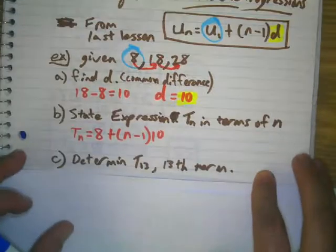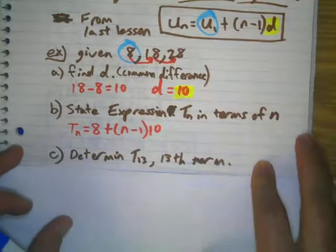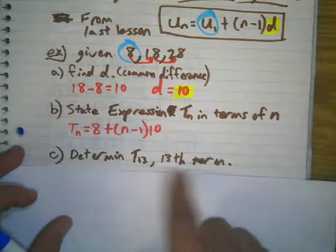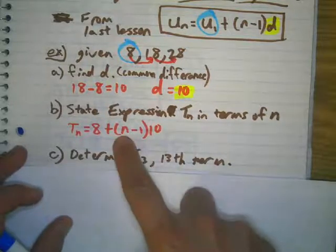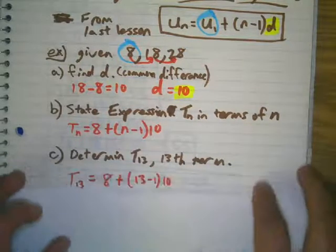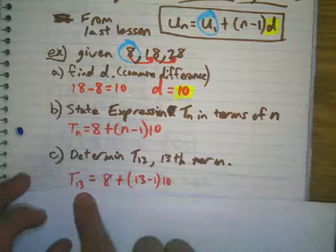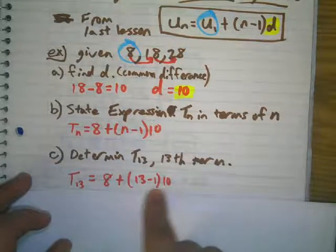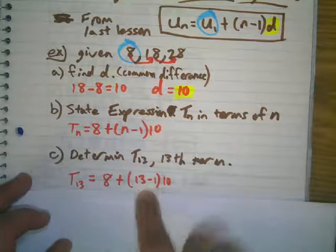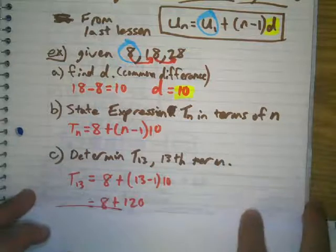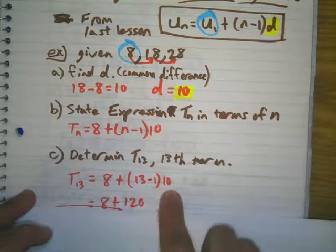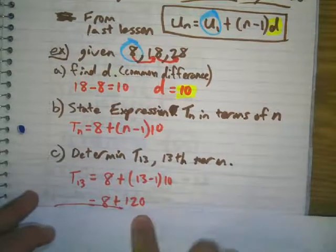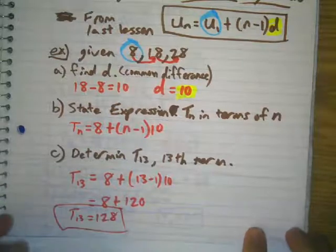Now if they say determine the 13th term, I'm just going to plug in 13 for n. So the 13th term is going to be 8 plus 13 minus 1 times 10. Well, 13 minus 1 is 12. 12 times 10 is 120, and 8 plus 120 is 128.